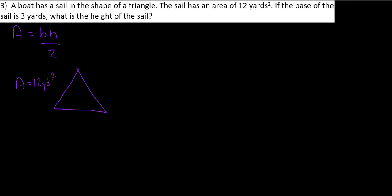And then we know for sure that the base of the sail is going to be three yards. So what we're trying to figure out right now is our height. So let me just go ahead and write the formula again. Area is equal to base times height divided by two, or some people use half of the base times height. It's the same thing.